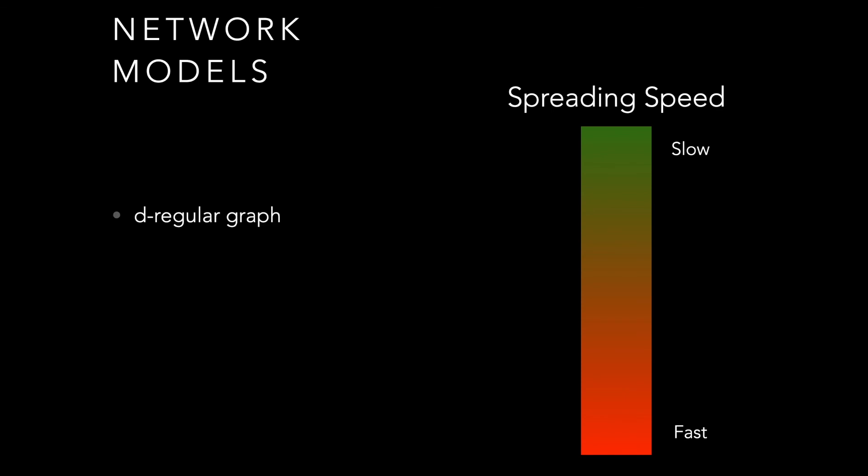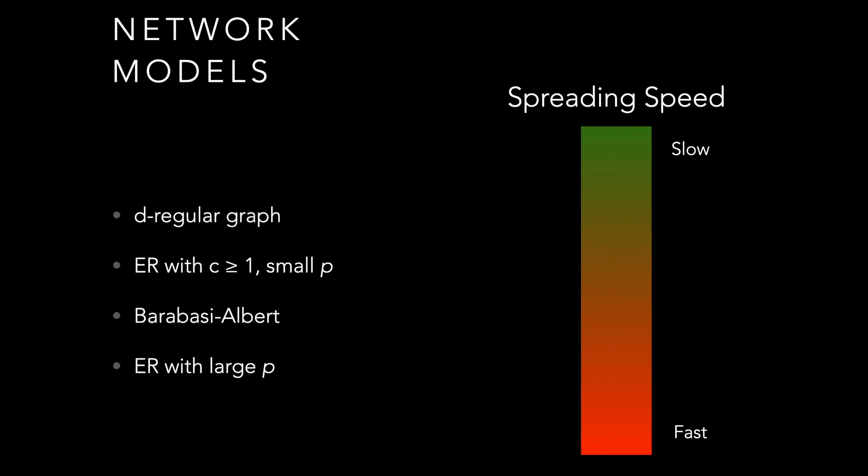Ranking the graphs we've talked about: the D-regular graph — the ring graph from the Watts-Strogatz model — has probably the slowest spreading speed because it has the highest diameter. ER models with average degree greater than one but small p will have slightly faster contagion. The Barabasi-Albert model will be even faster. And the ER model with large p or large connectivity means it's the fastest to spread across the graph rapidly.